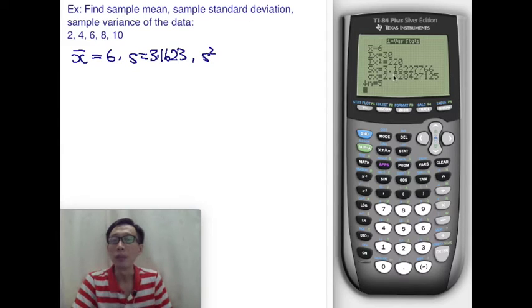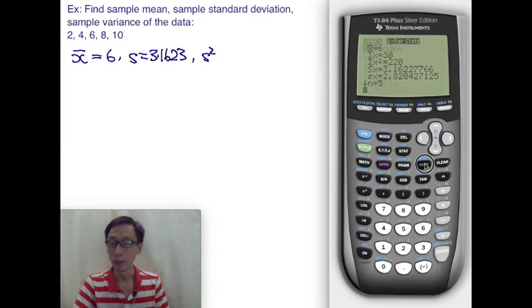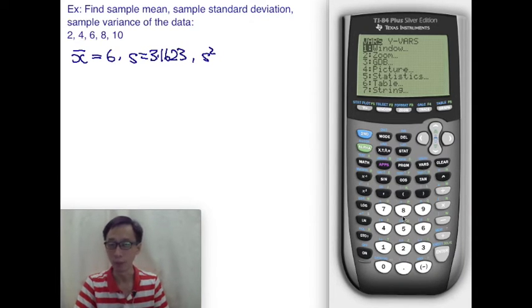Now, we'll be tempted to retype 3.1623 here, but we really don't have to. We just use the variable button here and then for statistical analysis, always choose 5. It's almost automatic. Click VARS, then 5.